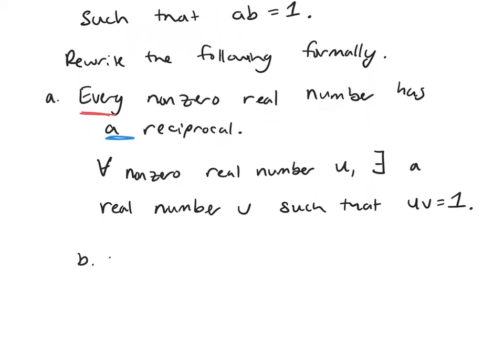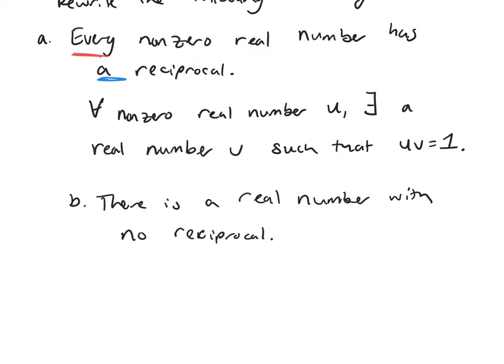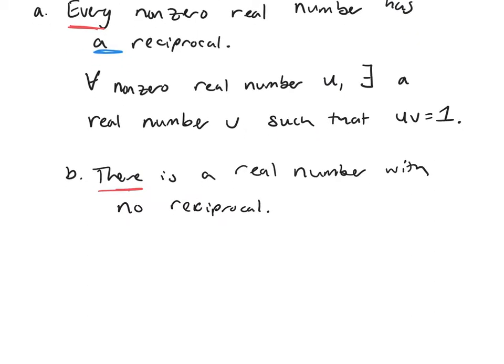Let's look at one more of these. There is a real number with no reciprocal. So identify again your starting quantifier. There is a real number with no reciprocal. It means if I take any number.